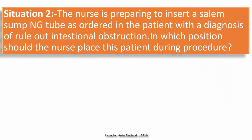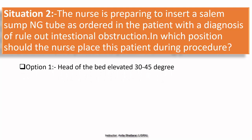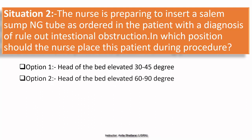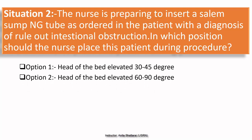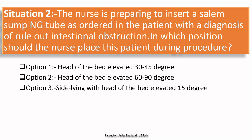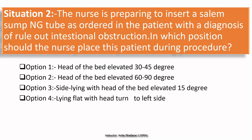Situation 2. The nurse is preparing to insert a saline-filled NG tube as ordered in the patient with a diagnosis of rule-out intestinal obstruction. In which position should the nurse place this patient during the procedure? Option 1: Head of the bed elevated 30 to 45 degrees. Option 2: Head of the bed elevated 60 to 90 degrees. Option 3: Side-lying with head of the bed elevated 15 degrees. Option 4: Lying flat with head turned to the left side.